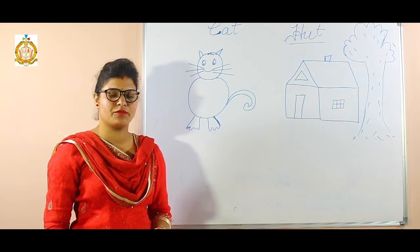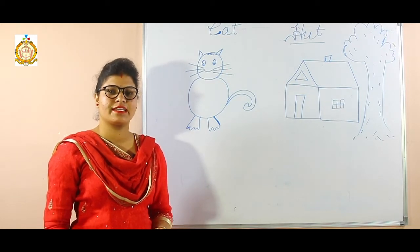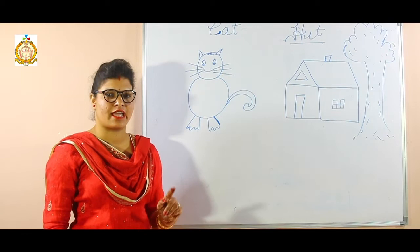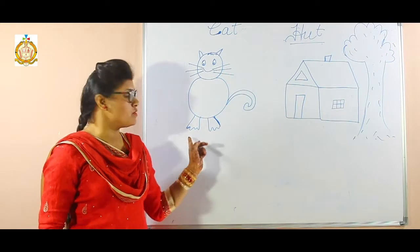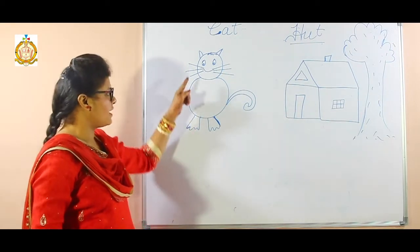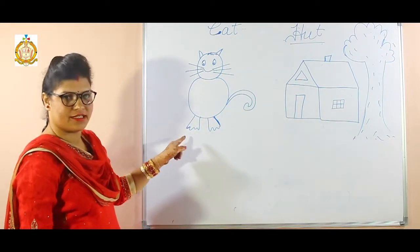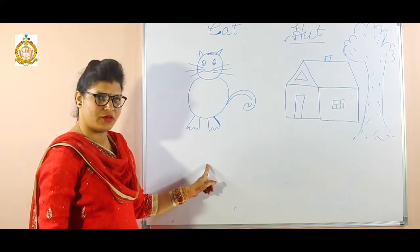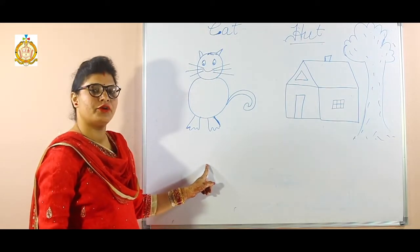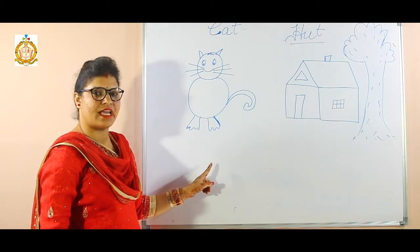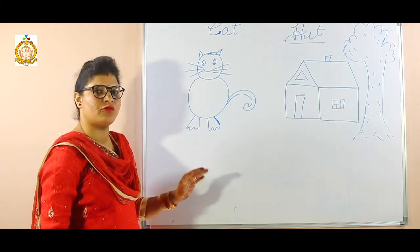What I am going to do? Draw cat and hut. First I will draw cat. You see how I have drawn — I have drawn a cat, the picture of cat, so I will draw it here. You also open your drawing and draw with me.